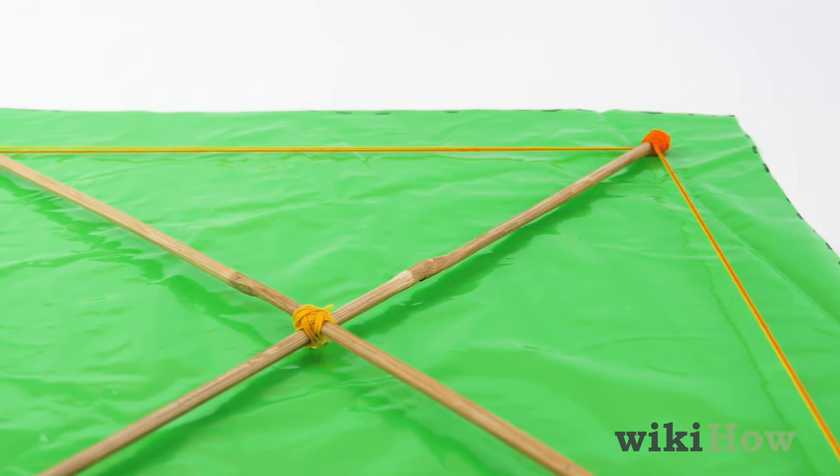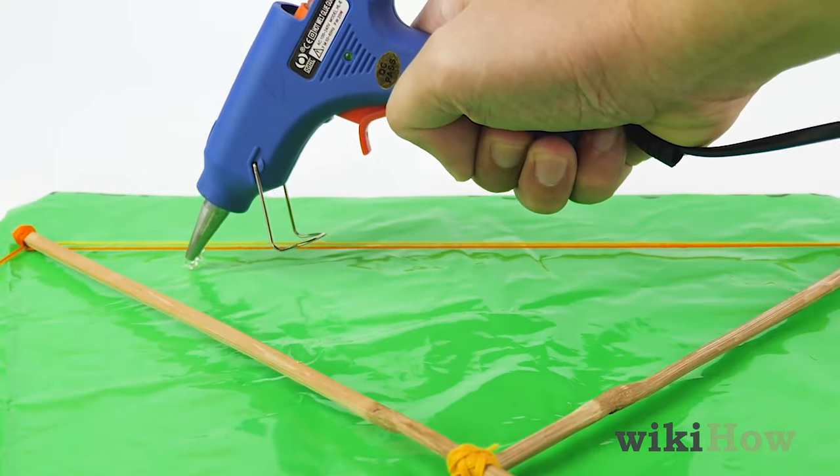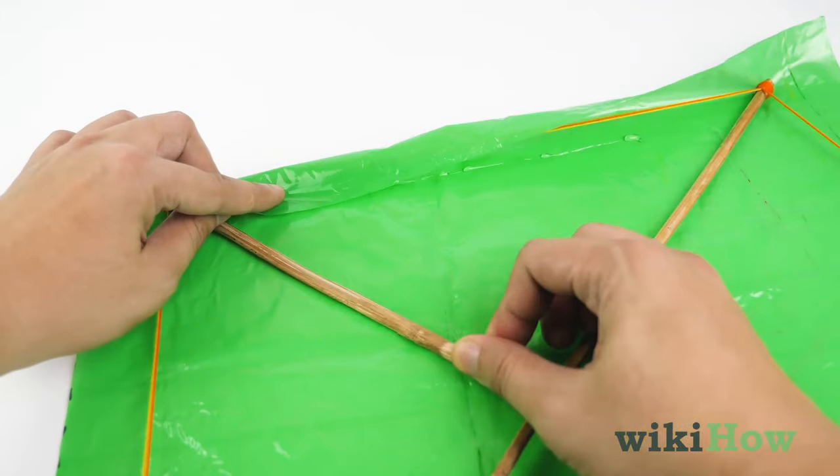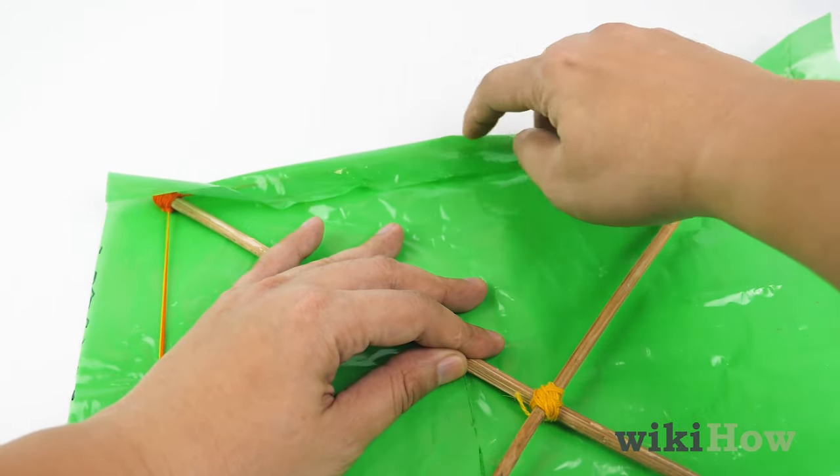Then lay the frame on top of the sheet you've cut and line the inside of each dowel with hot glue. Fold the excess plastic over the dowel and press it into the hot glue.